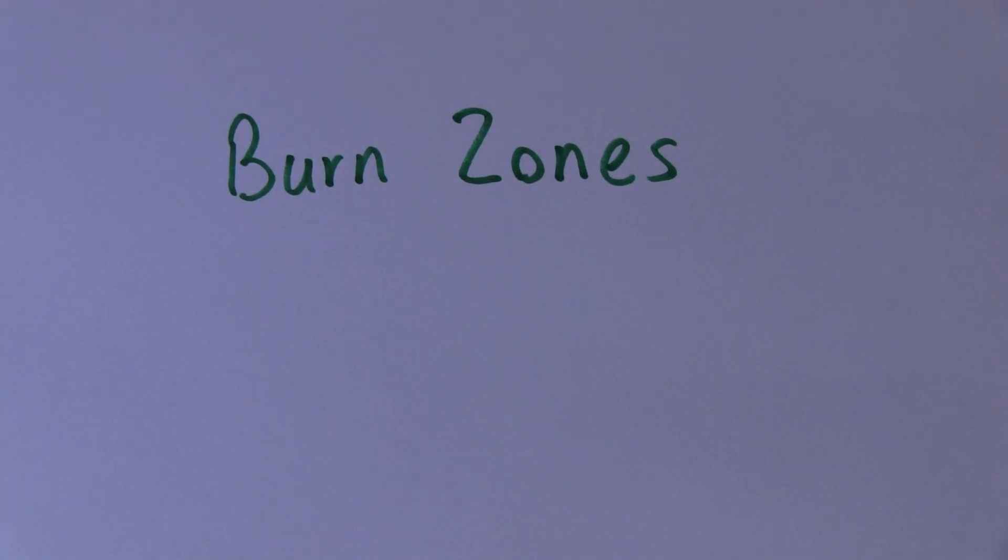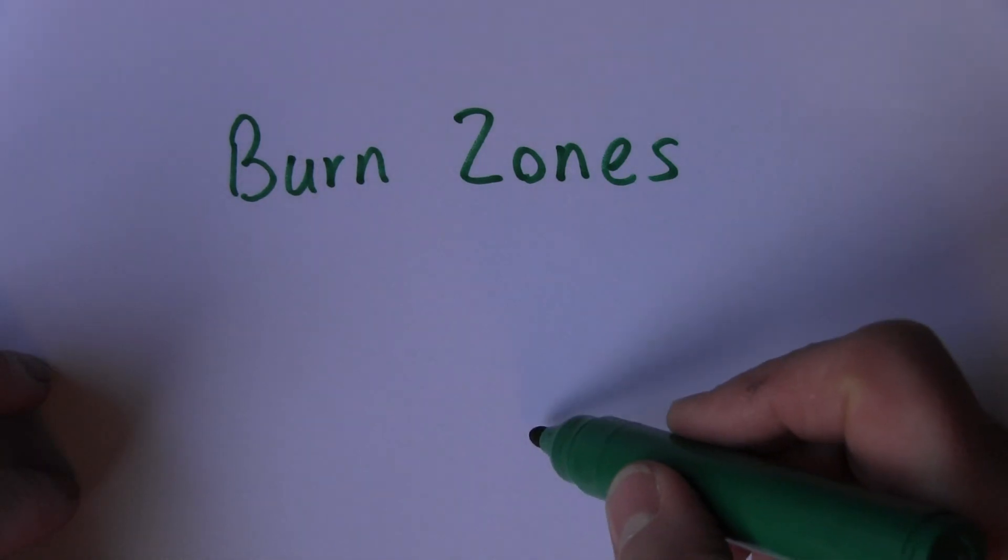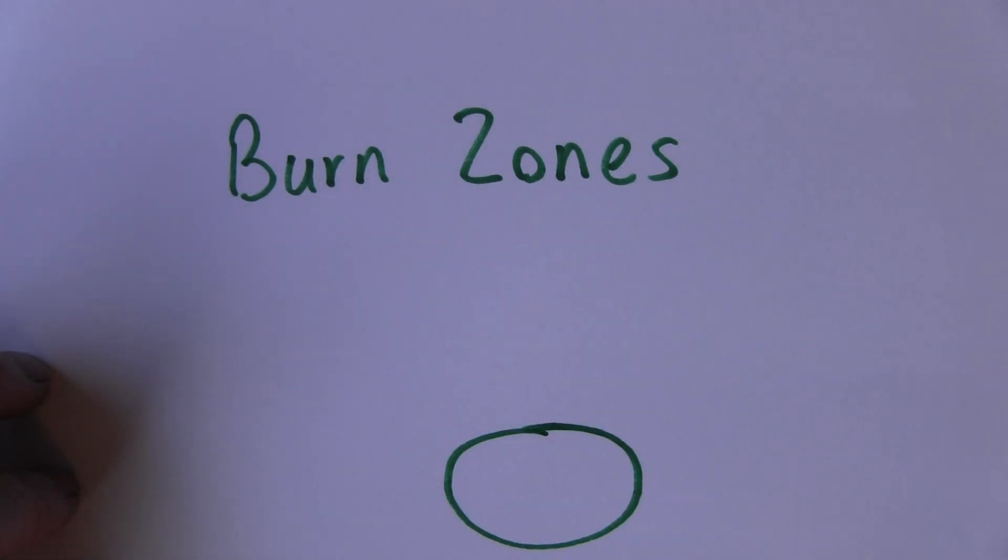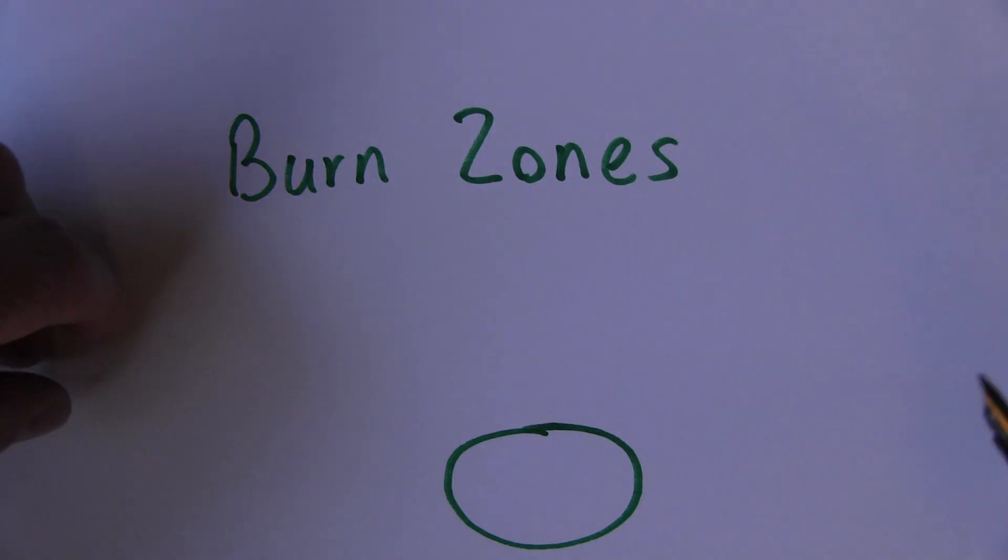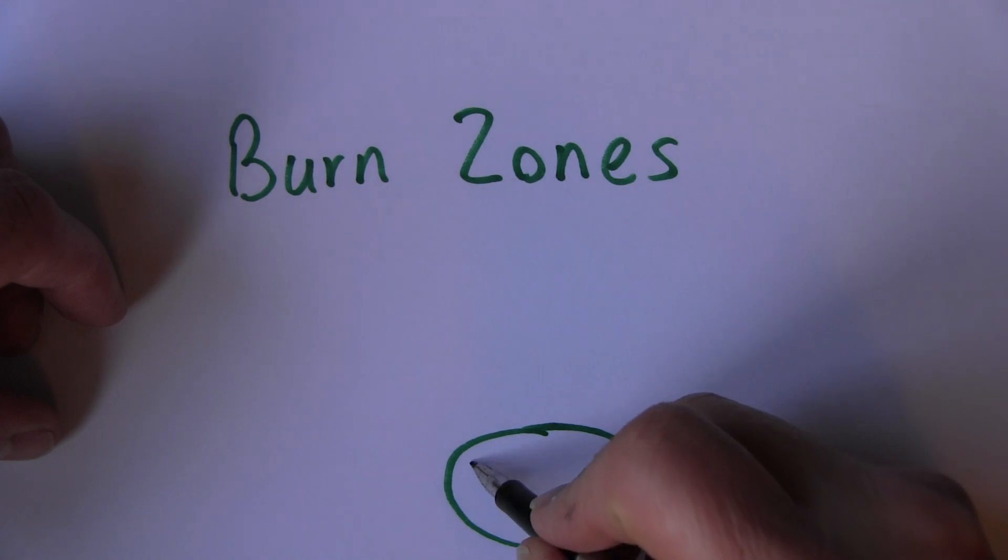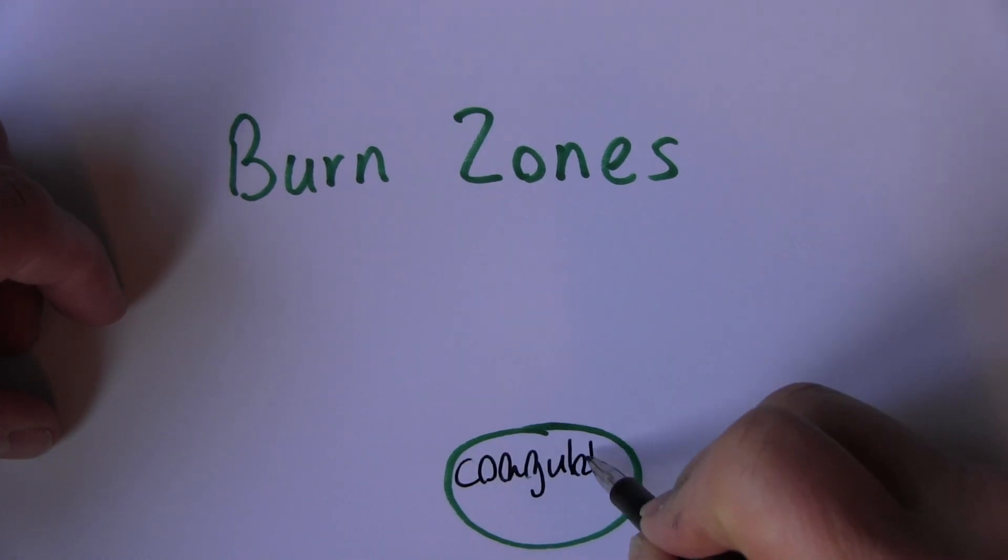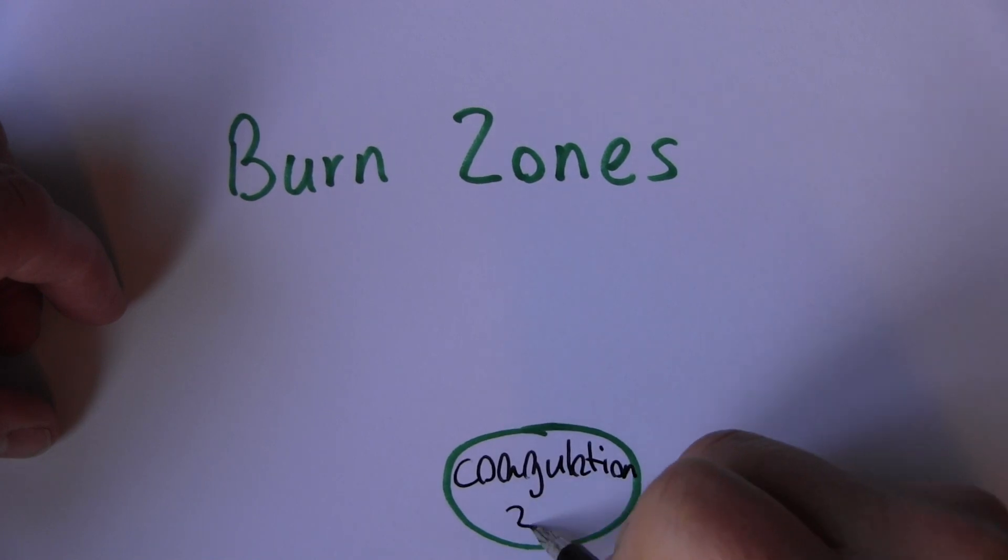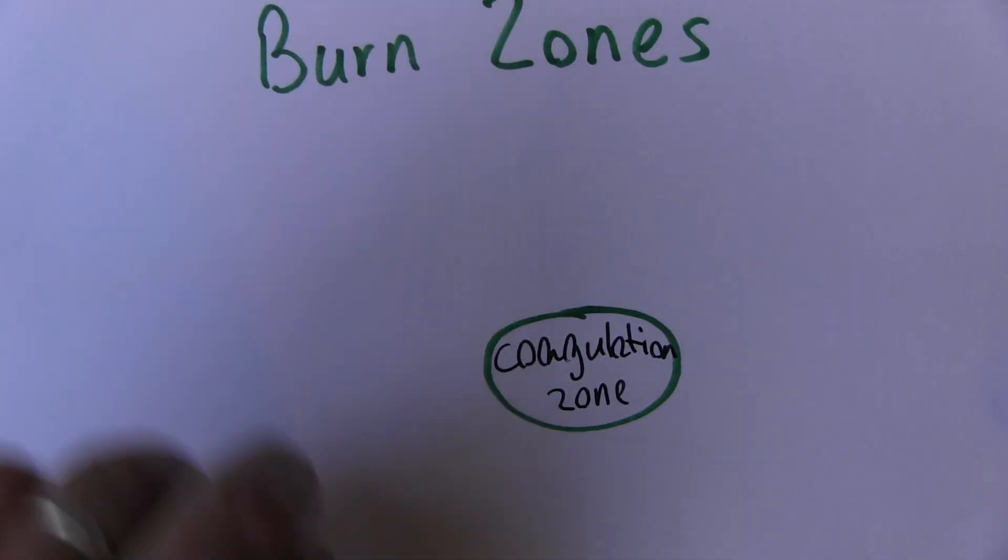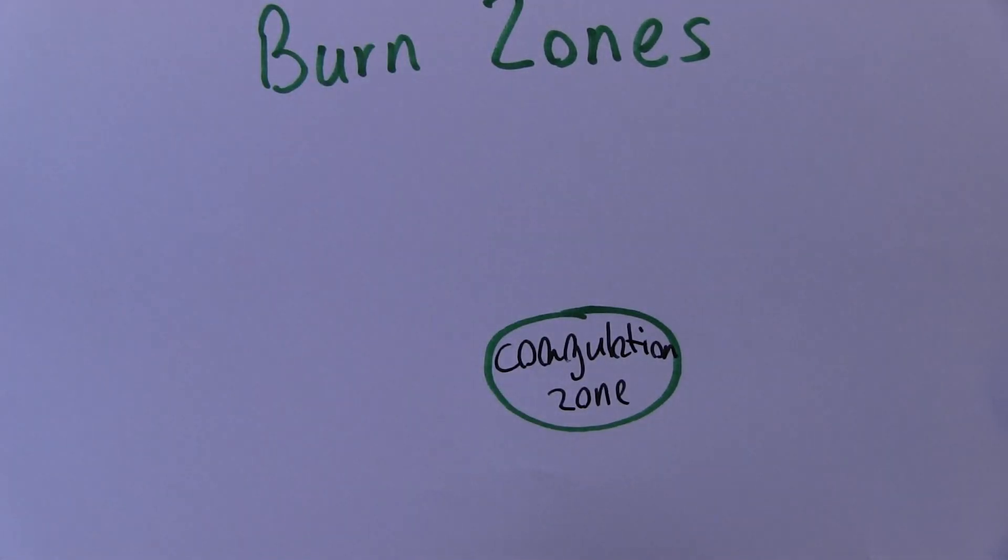In this video we're thinking about burn zones, the areas of the burn. The first area we want to consider is the area where there's actually necrosis and death of tissue. In this area there's been coagulation, the coagulation zone, where the tissues have actually been killed, coagulated and lost. The proteins are denatured.